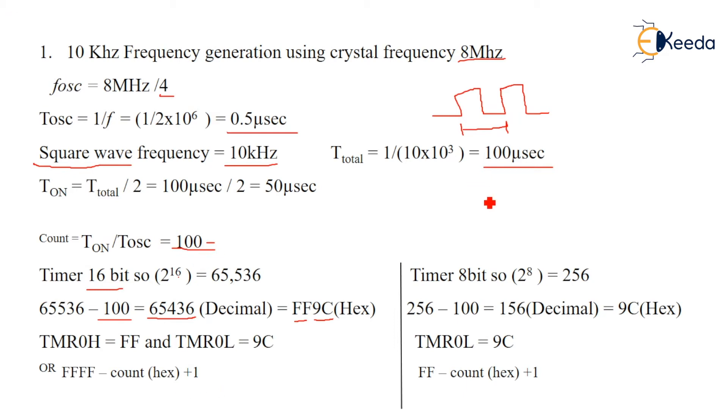So 256 minus 100 which gives the decimal value 156, which converts into the hex value 9C. So only TMR0L will be in the program and TMR0H is neglected. In hex value, 256 on the hex conversion is FF minus count plus 1.